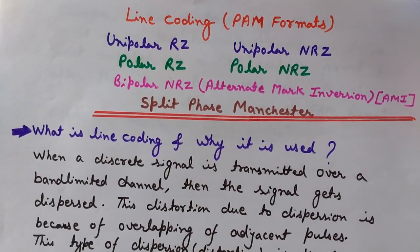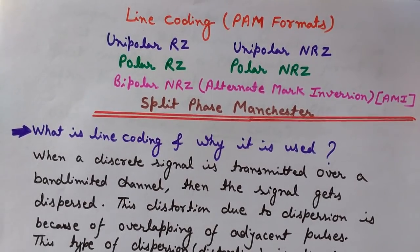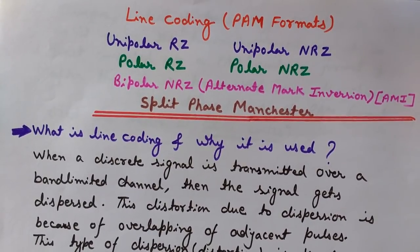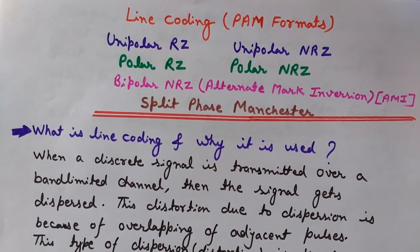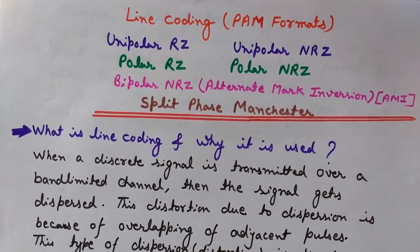Hello friends, I am Lalit Vassist and you are watching Engineering Made Easy. This is a lecture about line coding techniques, also known as PAM formats. Here we will understand what are line coding techniques and different kinds of line coding techniques like unipolar RZ, unipolar NRZ, polar RZ, polar NRZ, bipolar NRZ also known as alternative mark inversion (AMI), and split-phase Manchester line coding technique.